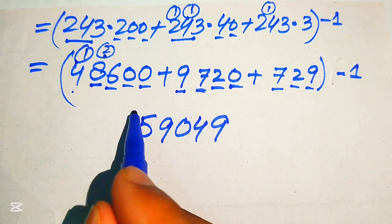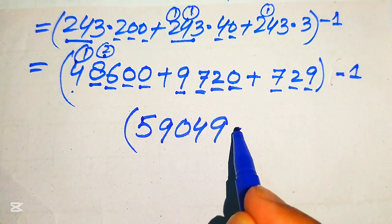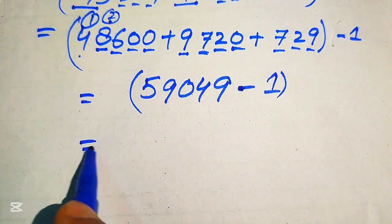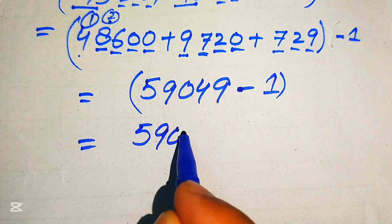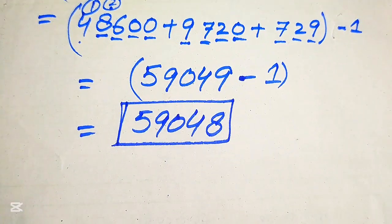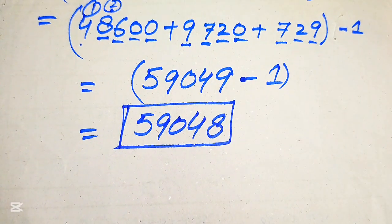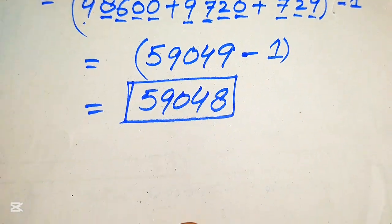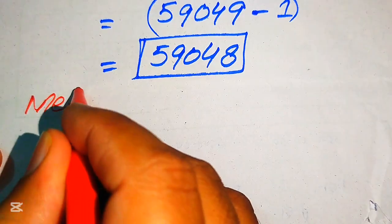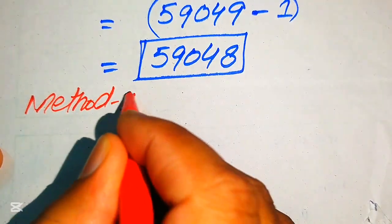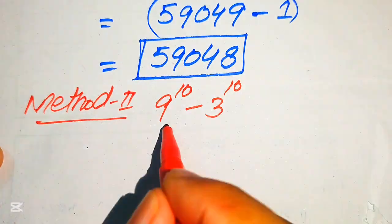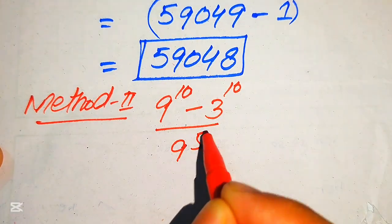We get 59049, and subtracting 1 gives the final answer of 59048. This is the final answer from Method 1. Now we move forward and solve this problem using the second method. We copy down the given question: 9 to the power of 10 minus 3 to the power of 10, divided by 9 to the power of 5.